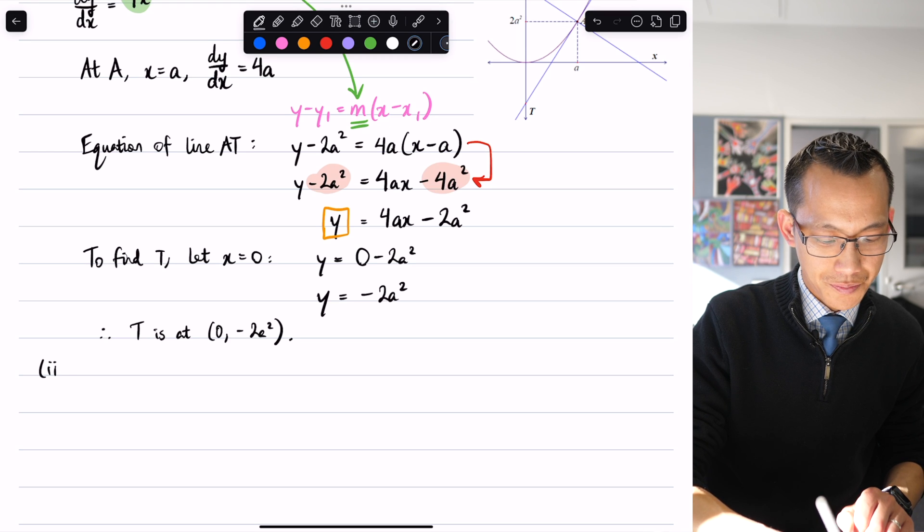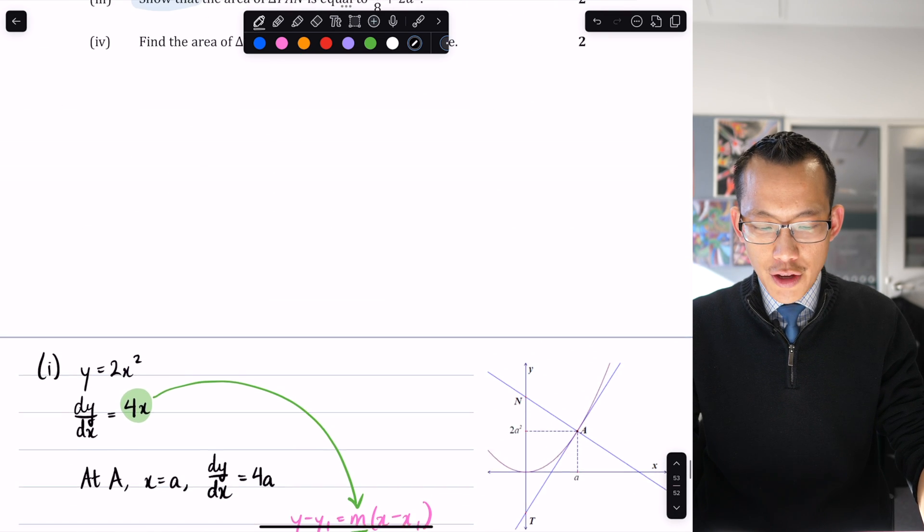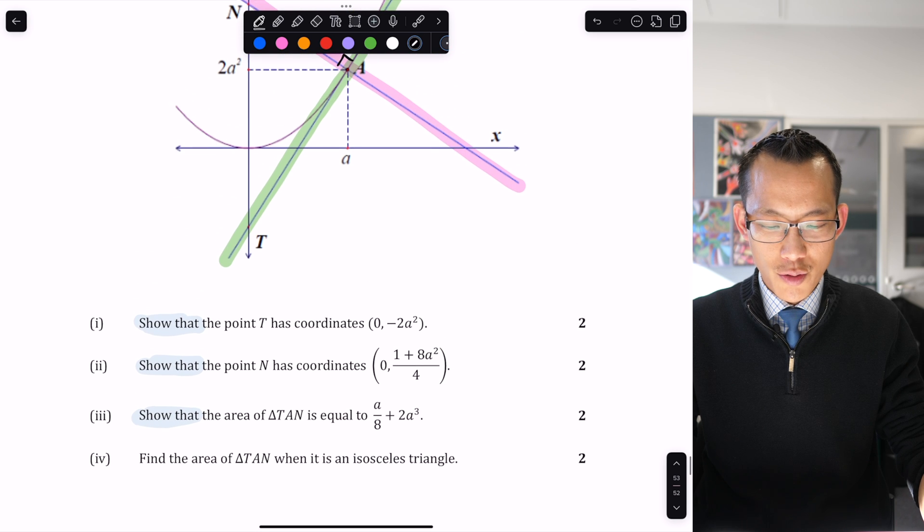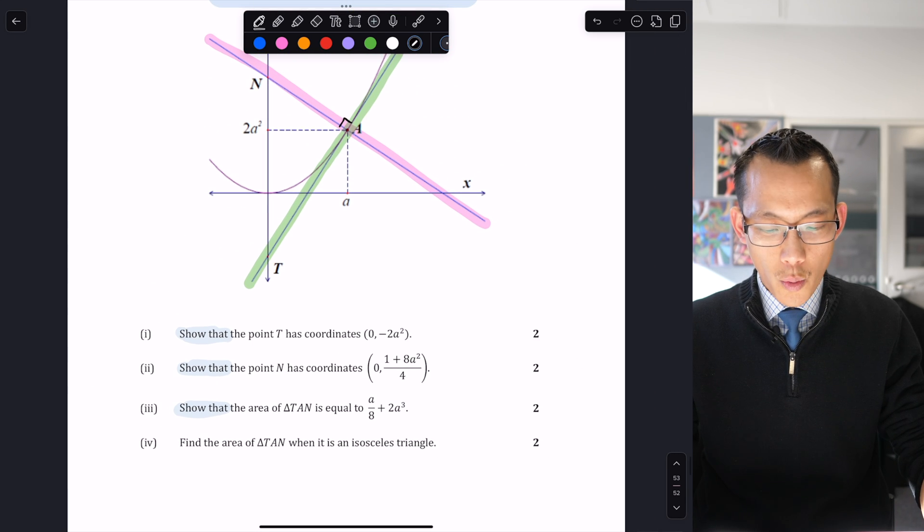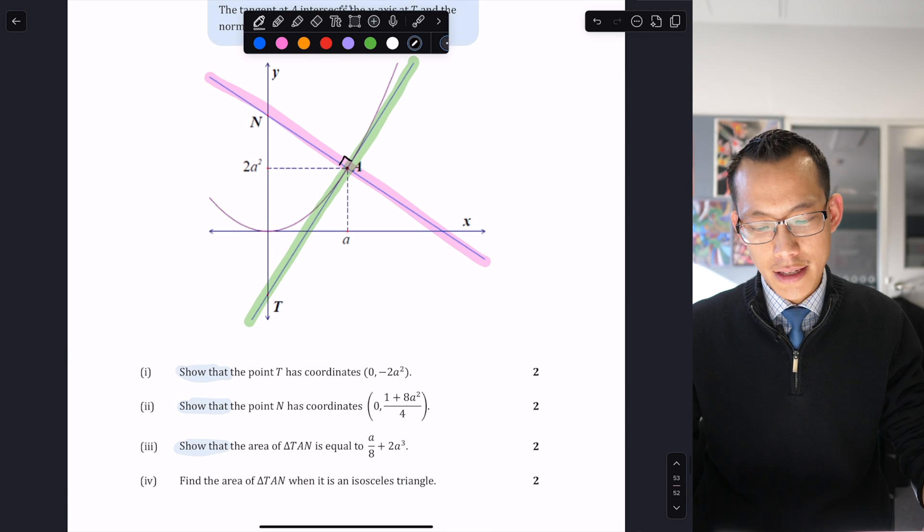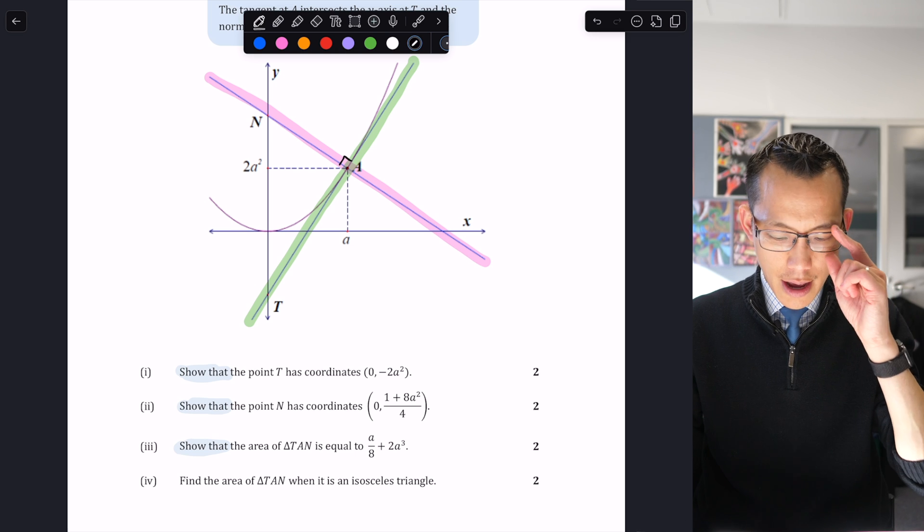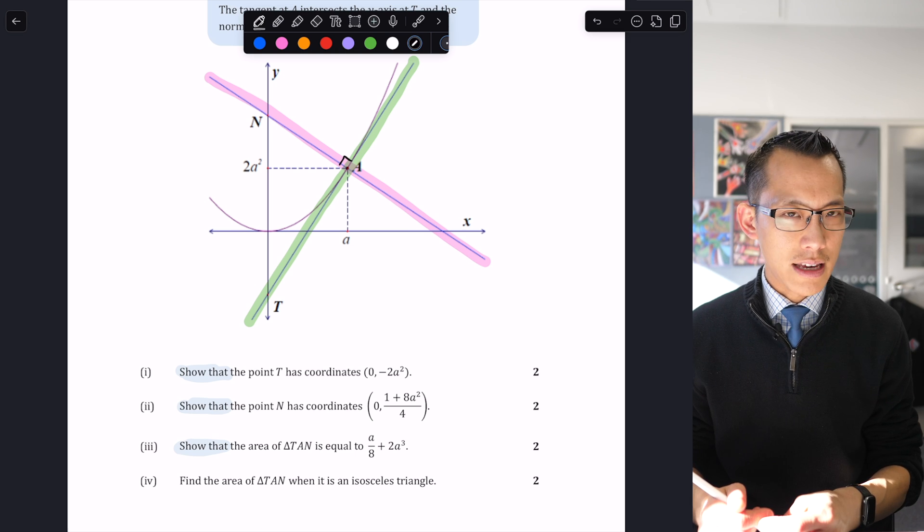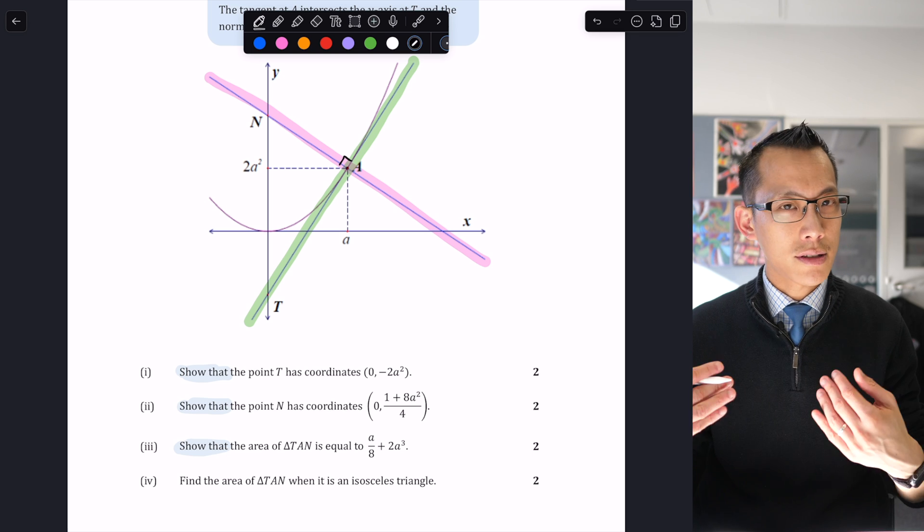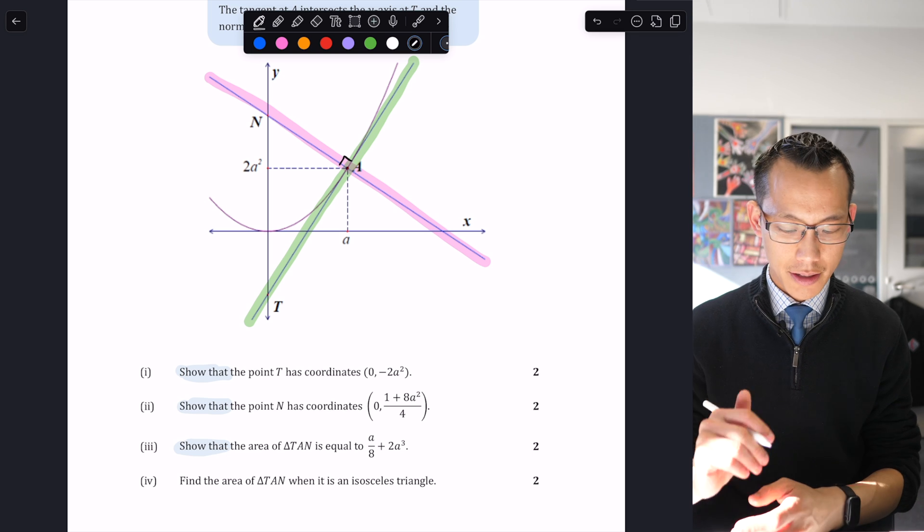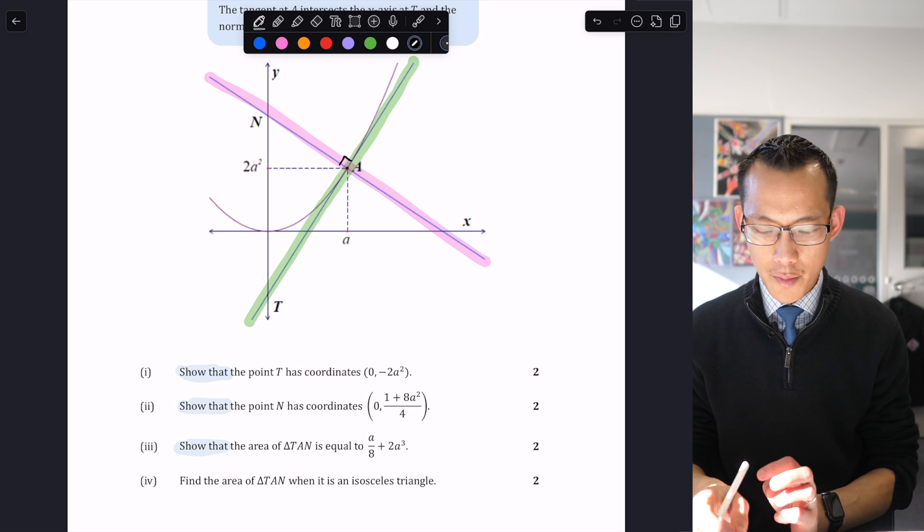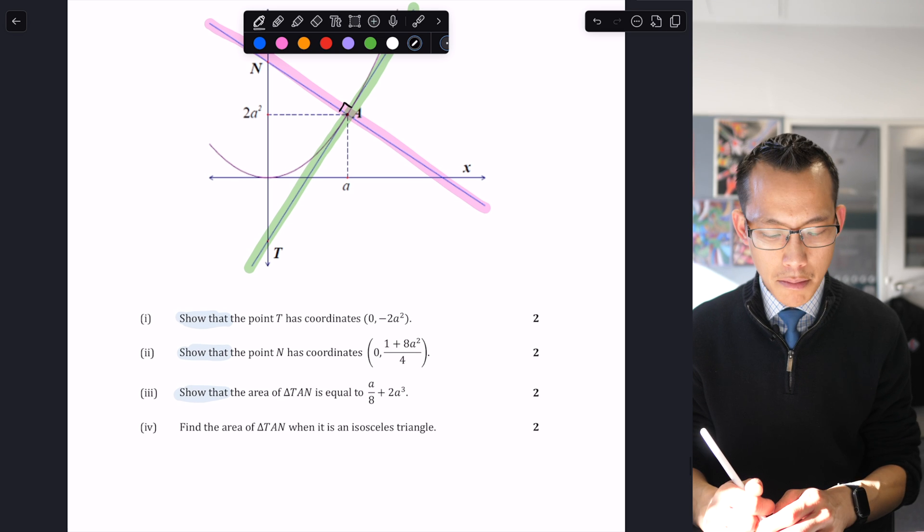Let's move to part two. Now this is going to feel really similar because we are finding the location of another point. We're going to use the equation of a line, in this case the pink line, the normal line, and then we're going to substitute in x equals zero because N, just like T, is on the y-axis.